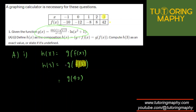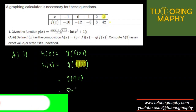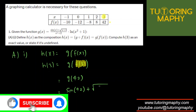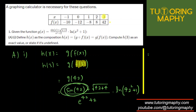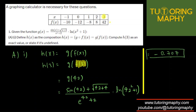Finding g(42) is straightforward — just plug 42 into g(x). For the exact value, substitute 42 everywhere: it's sine of 42 plus square root of 42 plus 4, over e raised to 42, plus 2 times natural log of 42 squared plus 1. Make sure your calculator is in radian mode, otherwise you'll get a wrong answer. Plugging this in gives approximately negative 0.707.